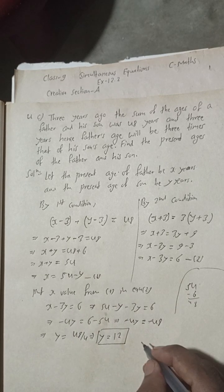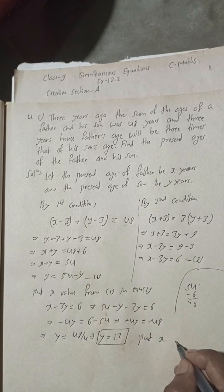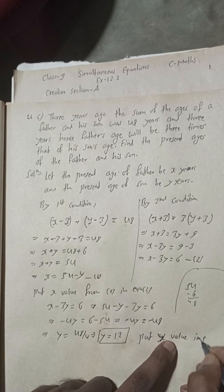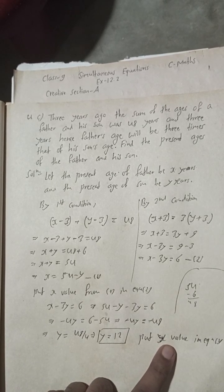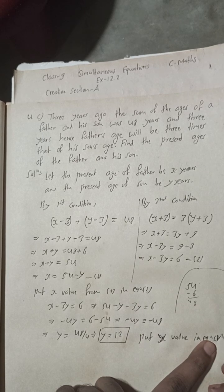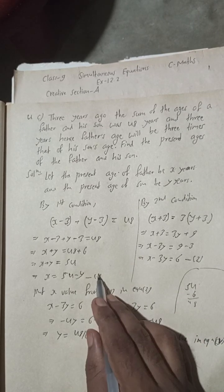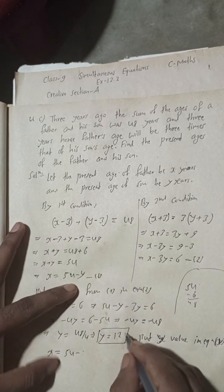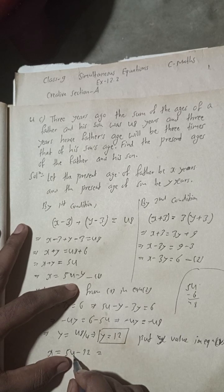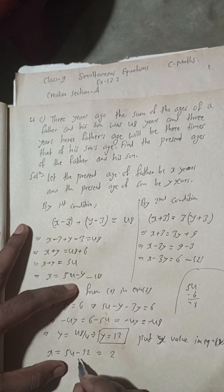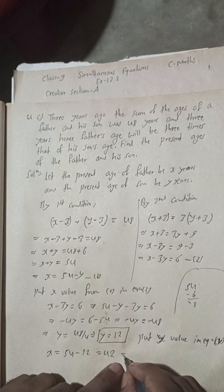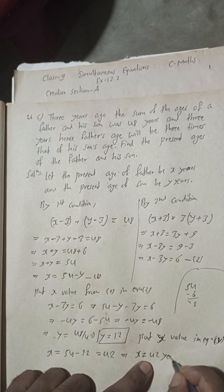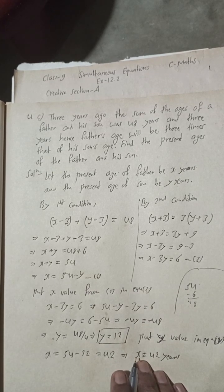Now put the y value into equation 1. So x equals 54 minus y equals 54 minus 12, which equals 42. The father's age x equals 42 years.